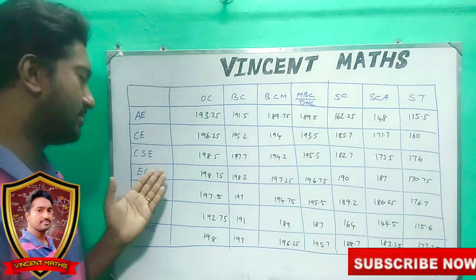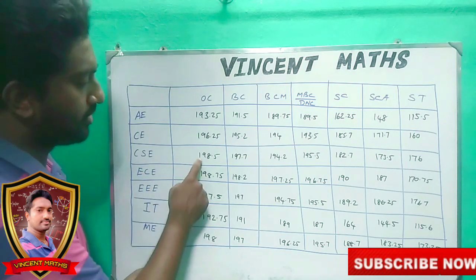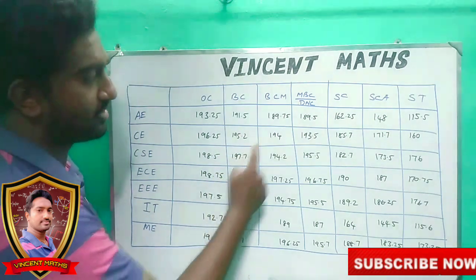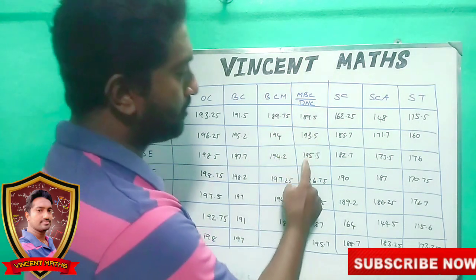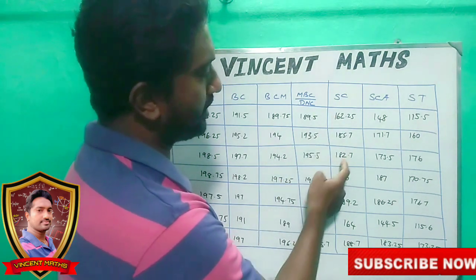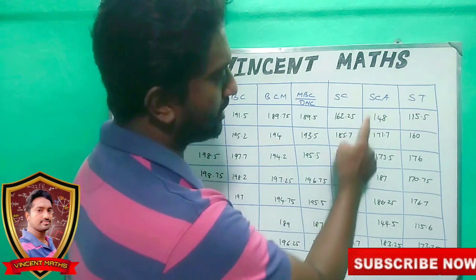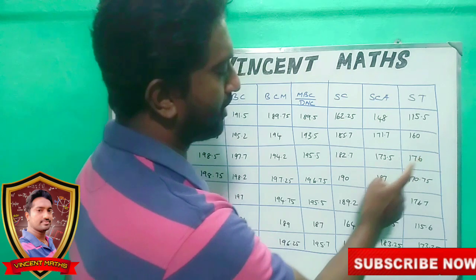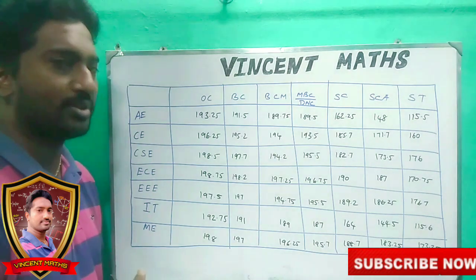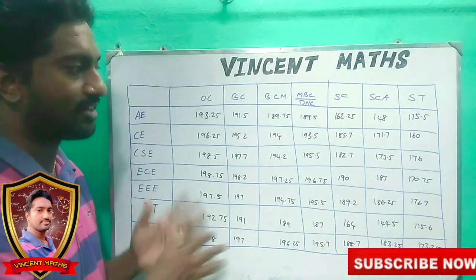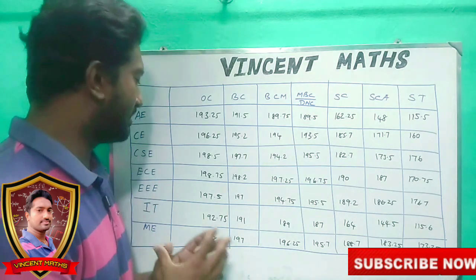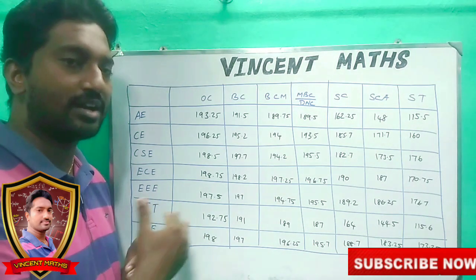CSE — Computer Science Engineering. The OC cutoff is around 198, BC is 197, BCM and MBC are approximately 195–196. If you choose any other branch, you will automatically be placed lower in the branch preference ranking.